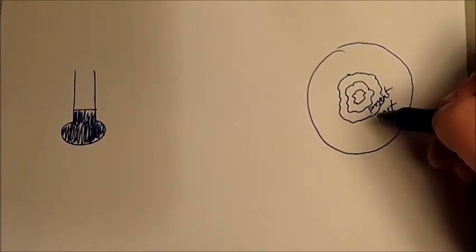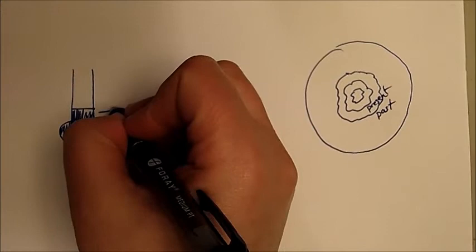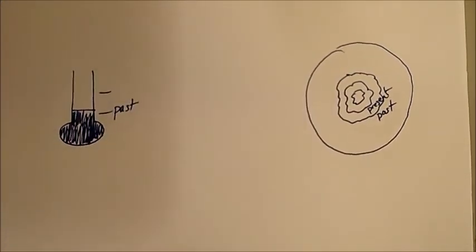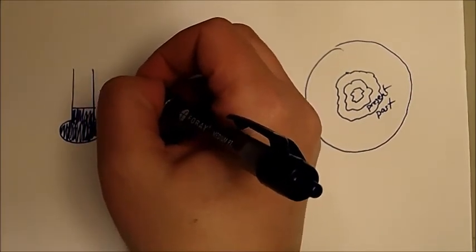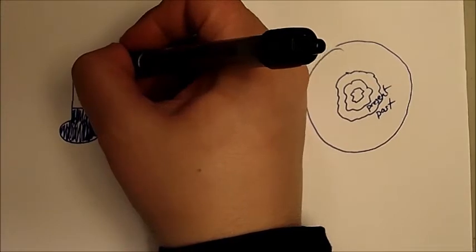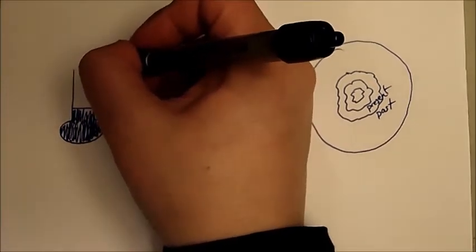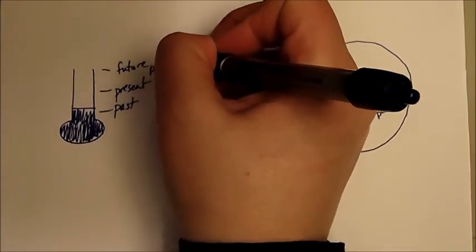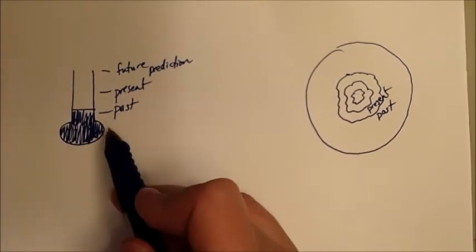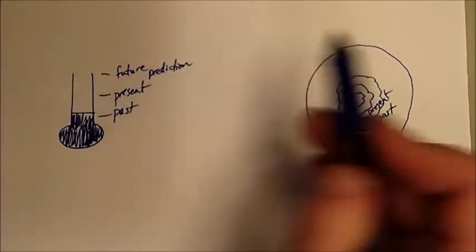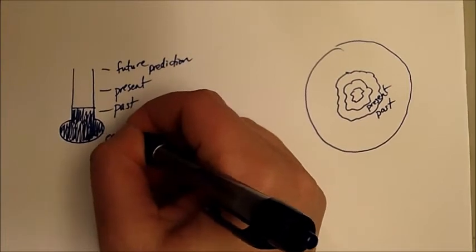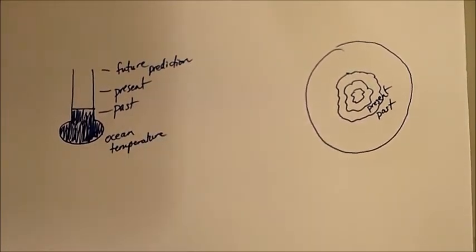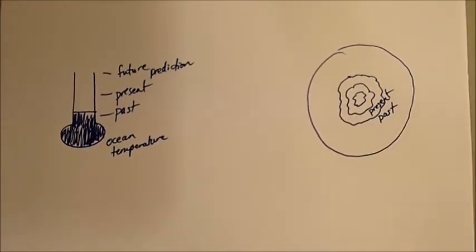That we're going to have smaller ice caps in the future. We also had in the past lower temperatures. And then in the present, we have higher temperatures. And then we have our future prediction up here. So note how it's getting warmer. By it, I mean the ocean temperature is getting warmer and that the ice caps are getting smaller.